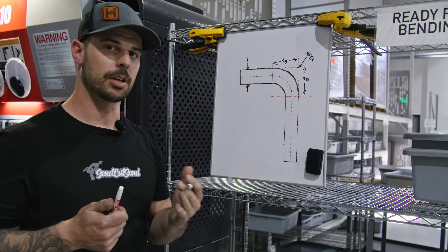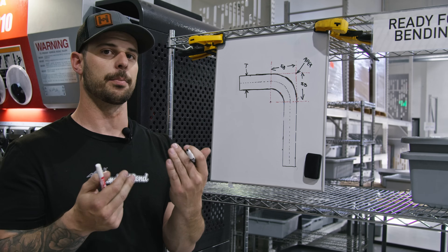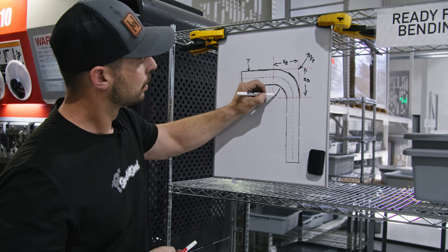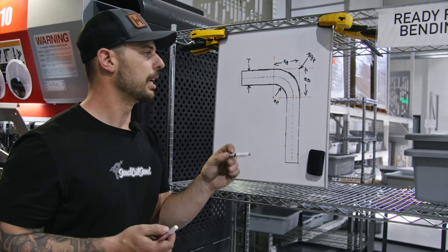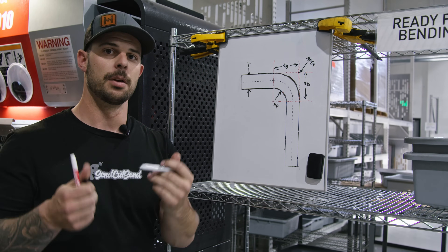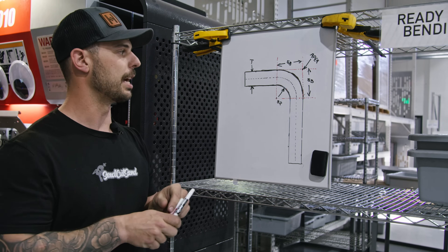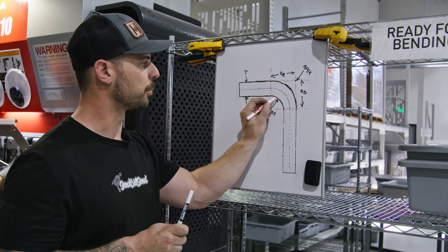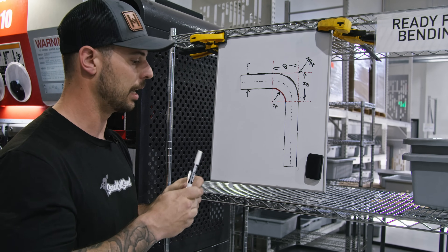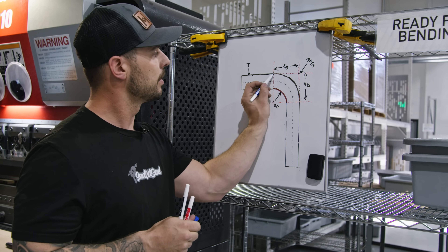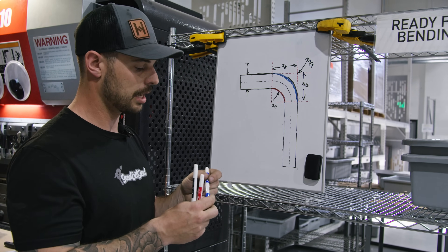Lastly, we have one more term to talk about: our bend radius. The bend radius is measured on the inside of the part, not the outside, and we'll call that BR. The bend radius is measured on the inside because the part undergoes compression and tension. The inside of the part — marked here in red — is in compression, while the outside — marked in blue — is in tension.